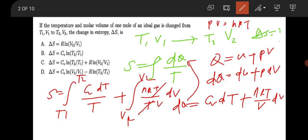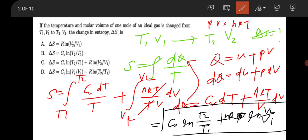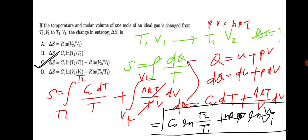Finally you will end with Cv ln(T2/T1) plus nR ln(V2/V1). So option C will be the correct answer to the question. Hope you got the point.